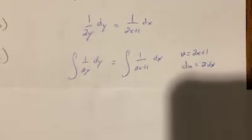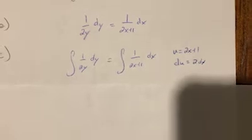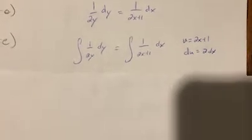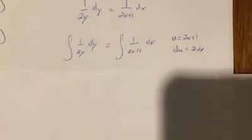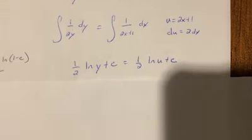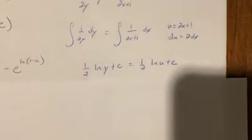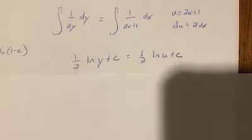We're going to use u-substitution on the right-hand side, and we are technically missing that 2 right there. So when we integrate the left, we get one-half natural log y equals—no, one-half natural log y plus c equals one-half natural log u plus c.